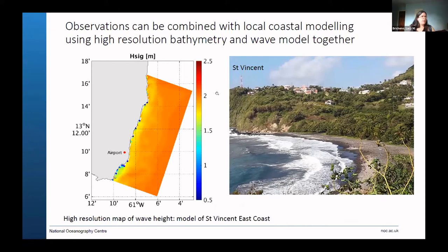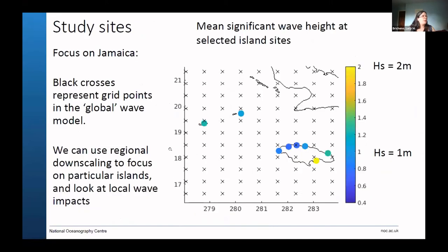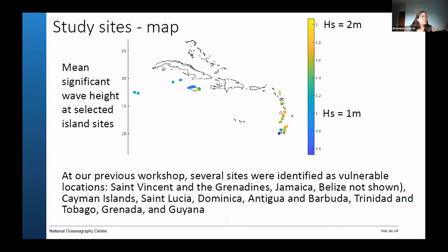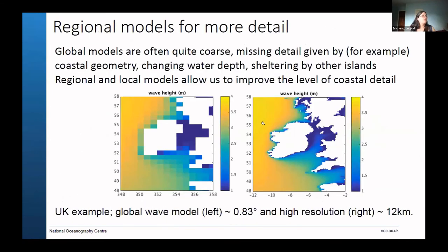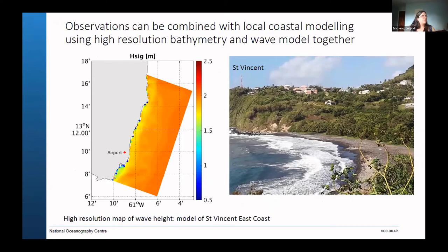This is an example of the nested model for St. Vincent, where they've embedded one of these really fine near-shore models into the global dataset. This is looking at the southeast coast of St. Vincent around the airport. This is the high-resolution SWAN model that's been nested in - a shallow water model. What was a single box in our earlier map, just one point in the global wave model, has now come into really high resolution at hundreds-of-meters scale. That was only possible because we had high-resolution bathymetry at that location, combining those observations with the big global wave picture to get a nice map of the near-shore waves.